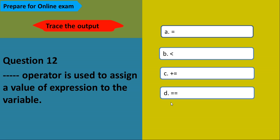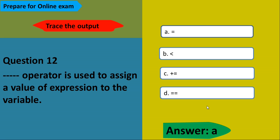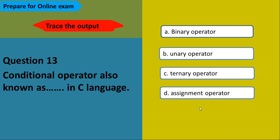This operator is used to assign the value of an expression to a variable. We know that the assignment operator does this. The options include equals (=), plus-equals (+=), and a comparison operator. The correct answer is A — the equals (=) assignment operator.